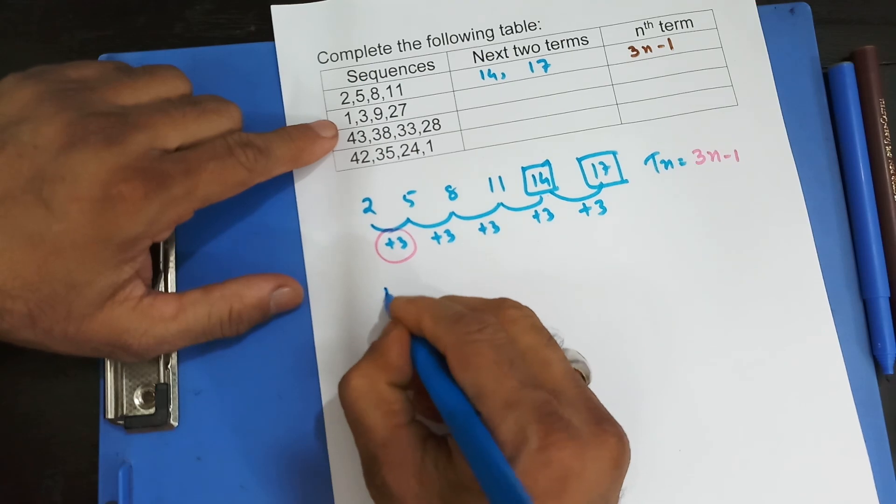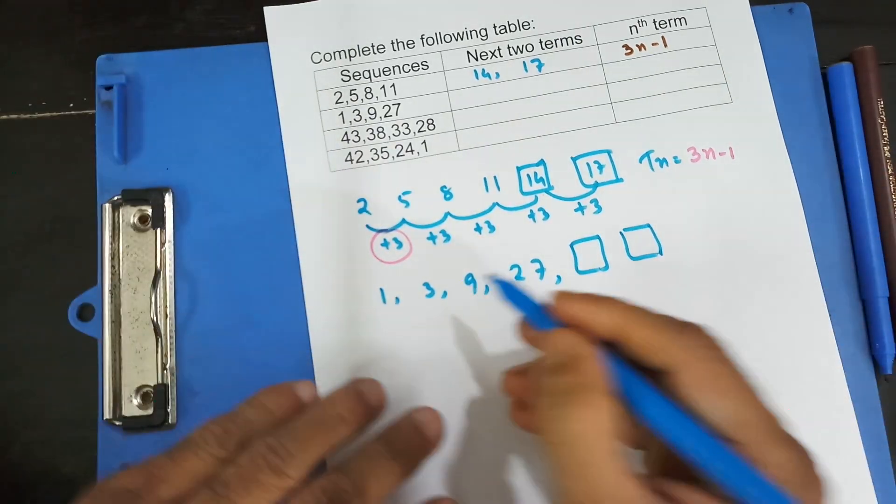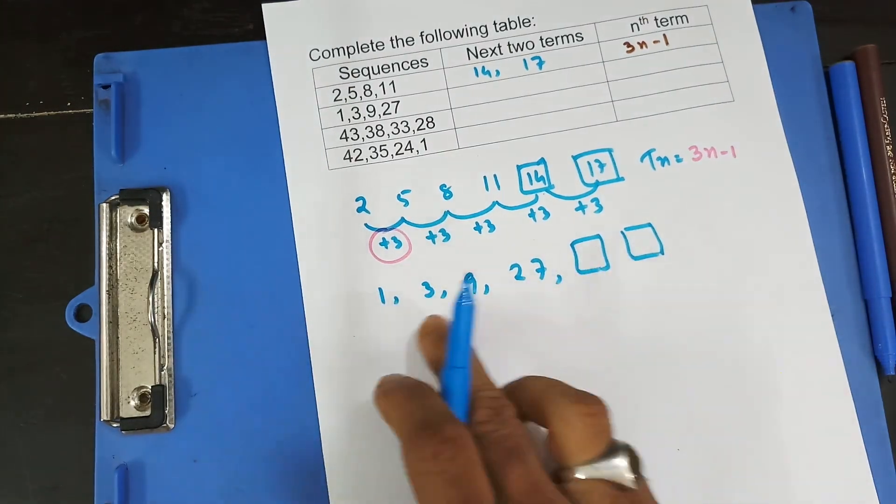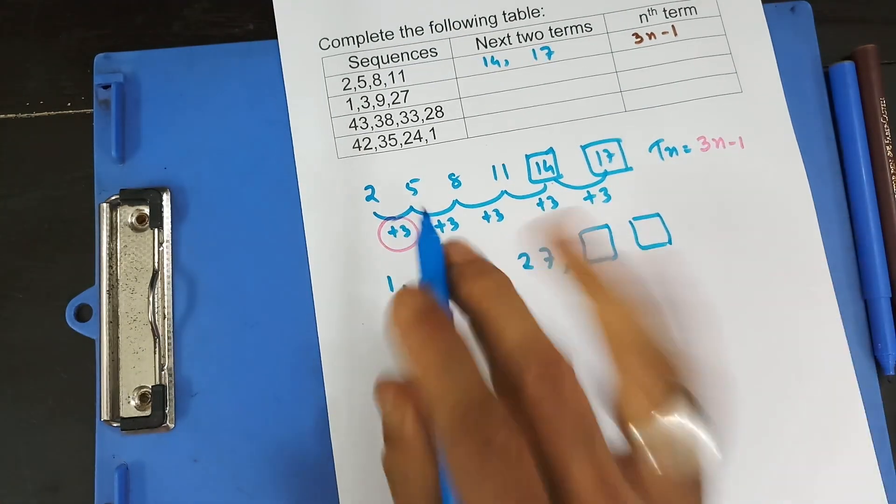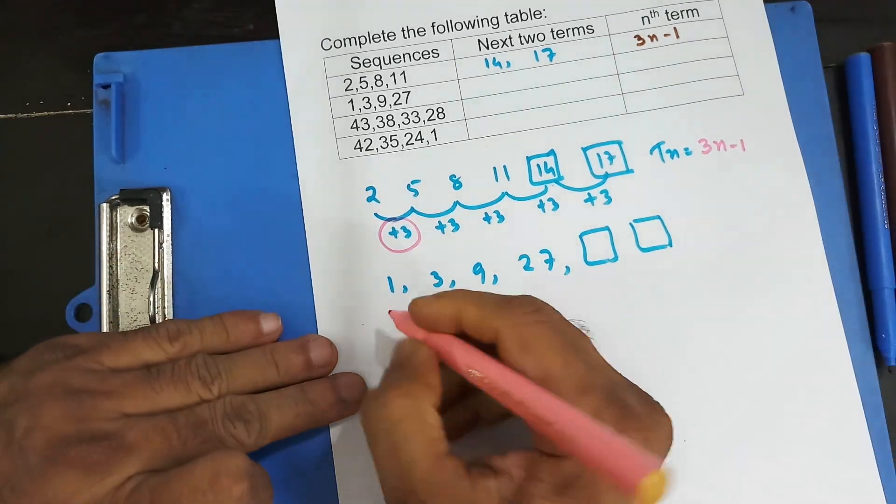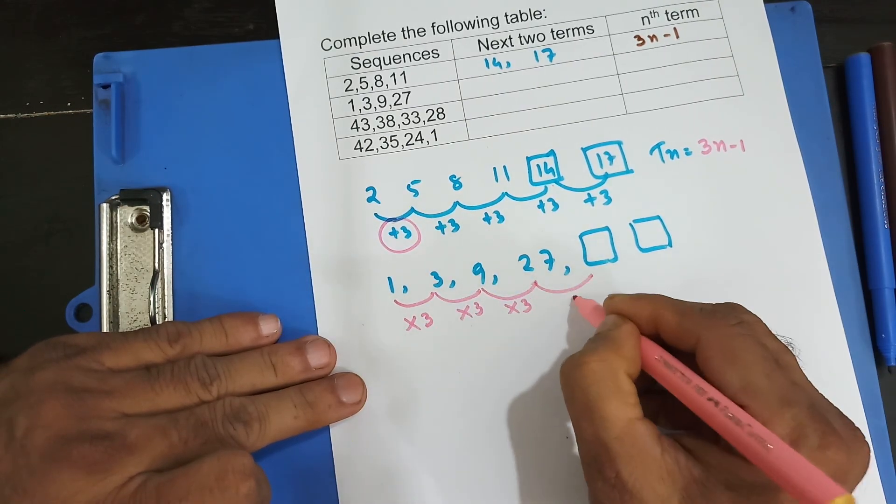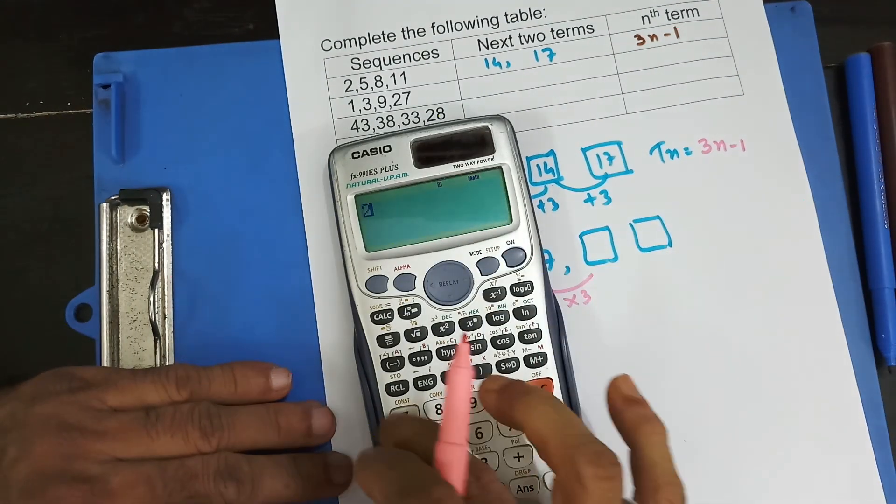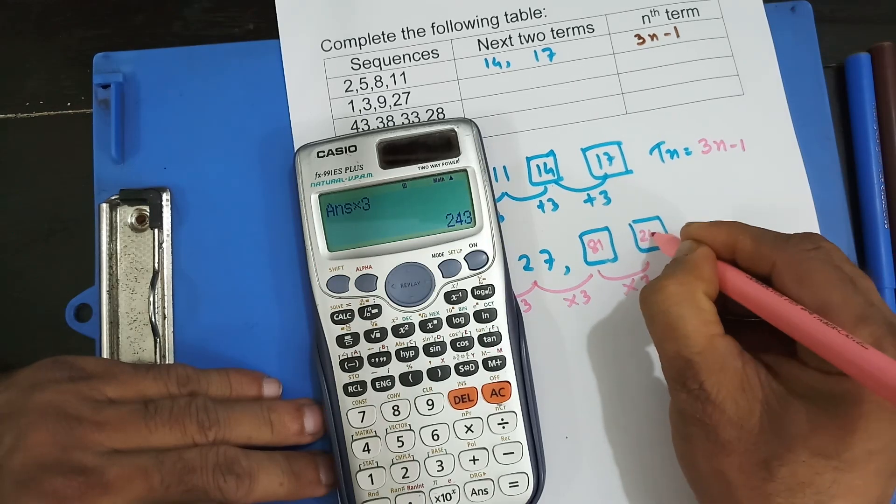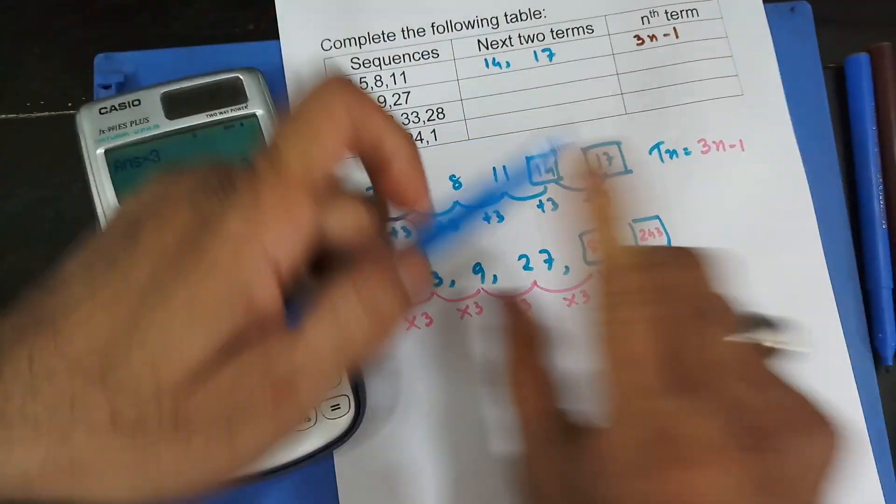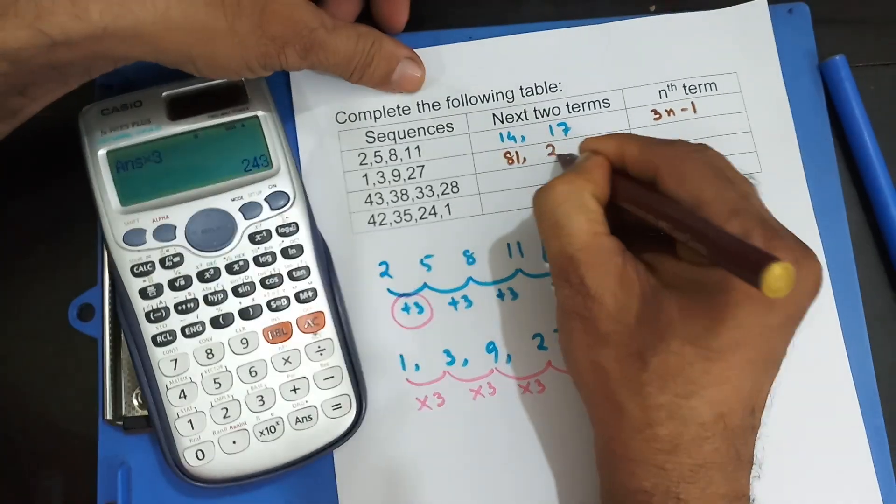Now, second one, that's 1, 3, 9, 27. You can probably figure it out at a glance that these are multiples of 3. 1 times 3 is 3, 3 times 3 is 9, 9 times 3 is 27. So that must be 27 times 3, it should be 81, but let me try that. 27 times 3 is 81, then times 3, that should be 243. So I got next two terms: 81 and 243.